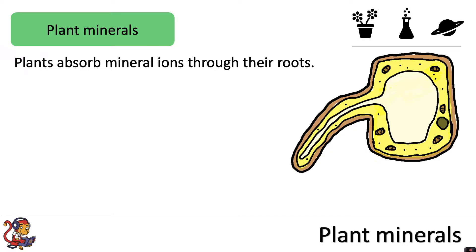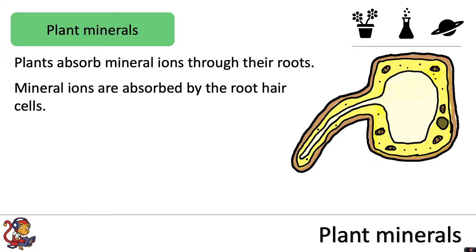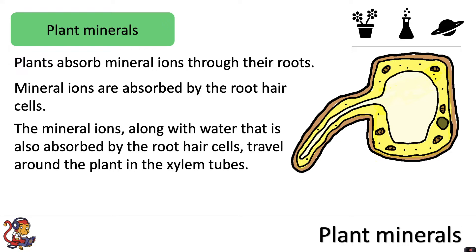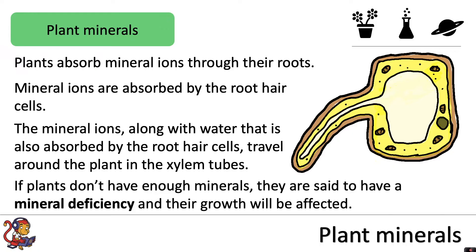Plants absorb mineral ions through their roots. Mineral ions are absorbed by the root hair cells — there's a picture of what one looks like on the right hand side, and the roots would absolutely be covered in these root hair cells. The mineral ions, along with water that is also absorbed by the root hair cells, travel around the plant in the xylem tubes. If plants don't have enough minerals they are said to have a mineral deficiency, and their growth will be affected.